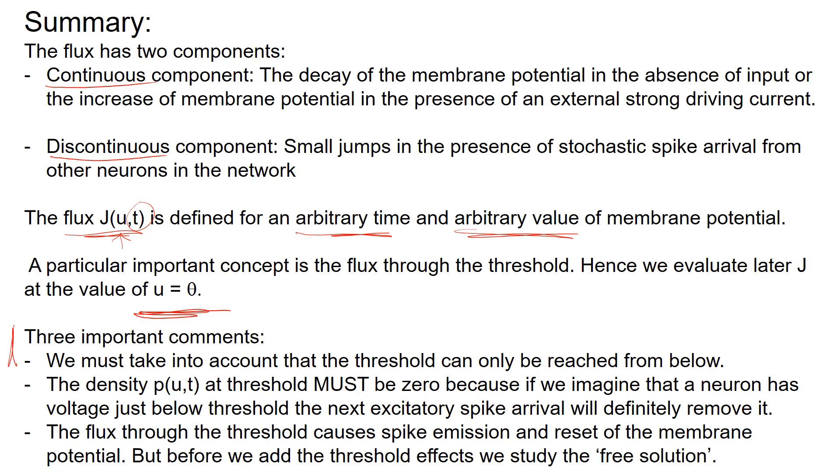Now, if we go through that, we must take into account that the threshold can only be reached from below. Moreover, as we will see, the density at threshold must be zero. Because if we imagine that a neuron has a voltage just below the threshold, then the next excitatory spike arrival will immediately remove it. So it can never be there because there's always a next spike arriving.